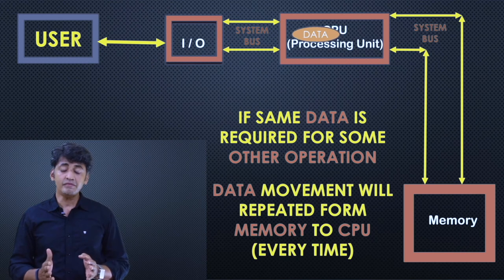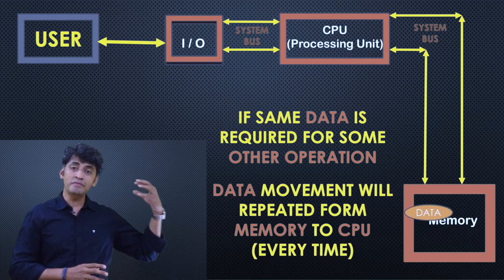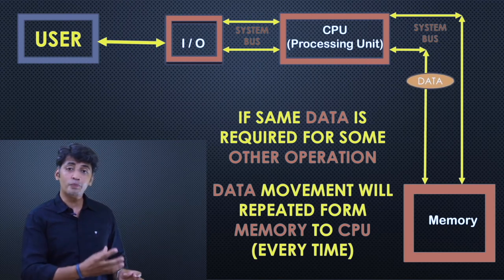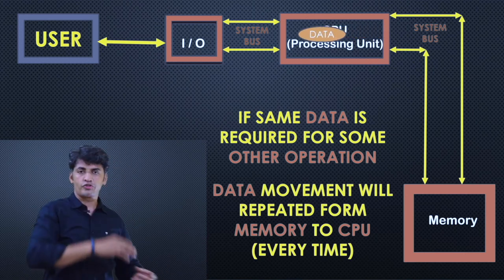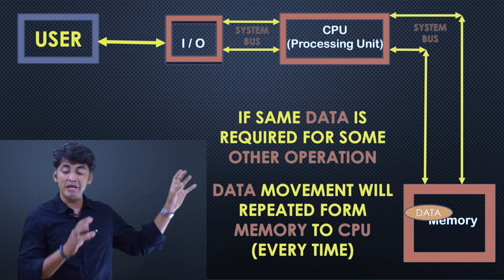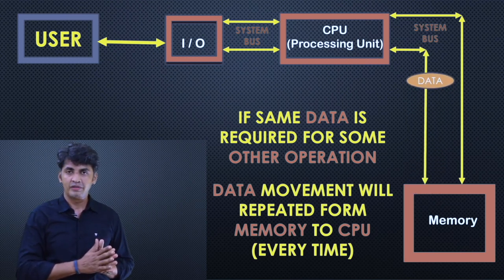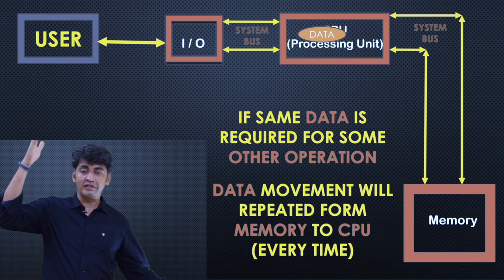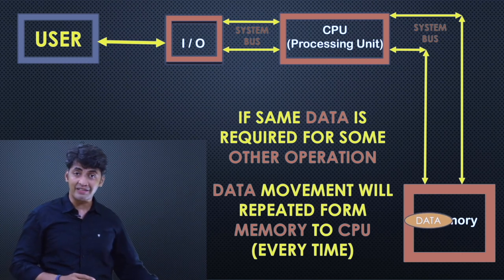If the data is required 10 times, the access time is also required 10 times. But if you are able to place a memory between the main memory and the processor — that middle memory may be called cache memory — you can store the frequently used data in the cache memory. This way, you can reduce the data transfer time between main memory and the processor with the help of cache memory.